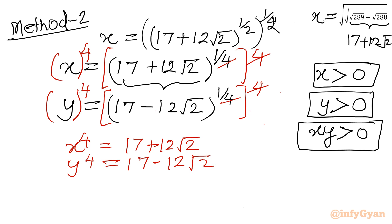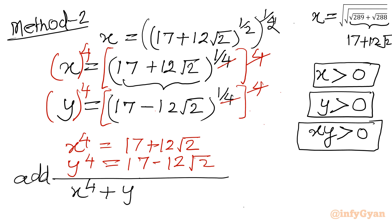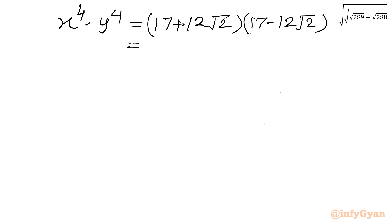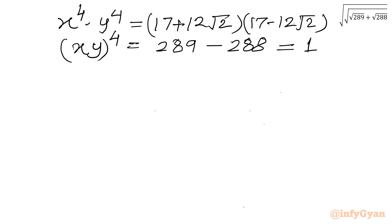Now I will add both the equations: x to the power 4 plus y to the power 4 equals 34. Now let us consider the product. x to the power 4 times y to the power 4 equals (17 plus 12 root 2)(17 minus 12 root 2). Using a plus b times a minus b equals a squared minus b squared: 17 squared is 289 minus 288 equals 1. So (xy) to the power 4 equals 1. Taking the fourth root of both sides, xy equals plus or minus 1.